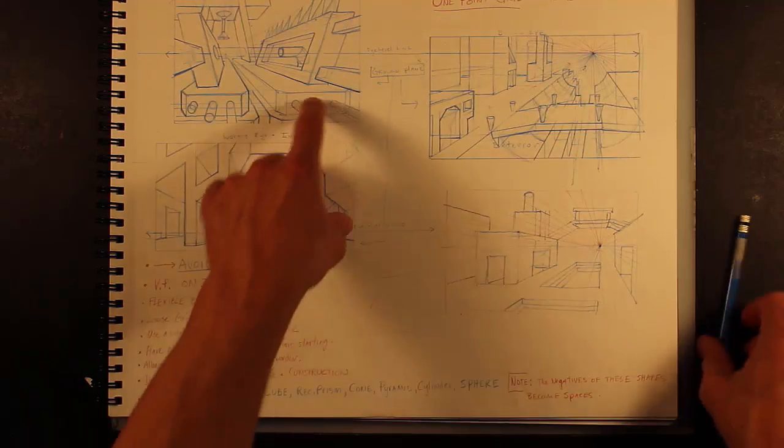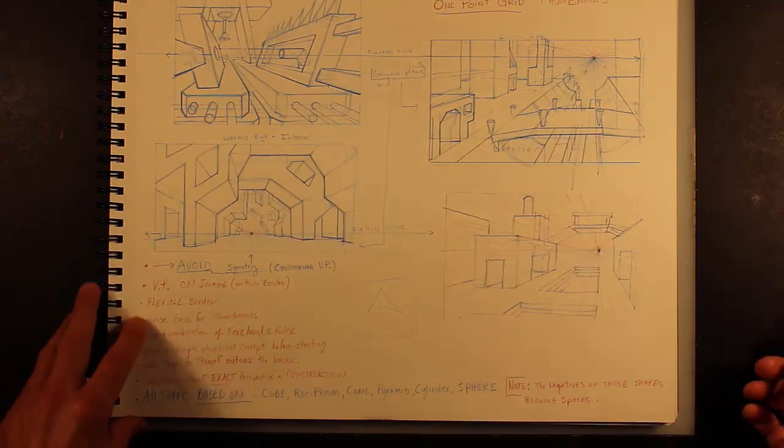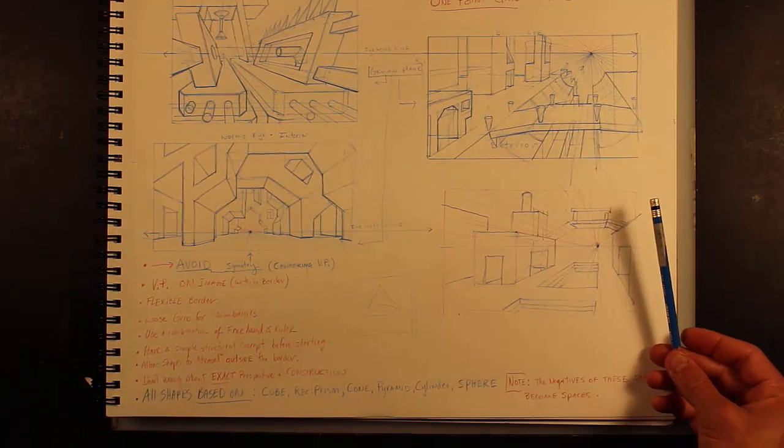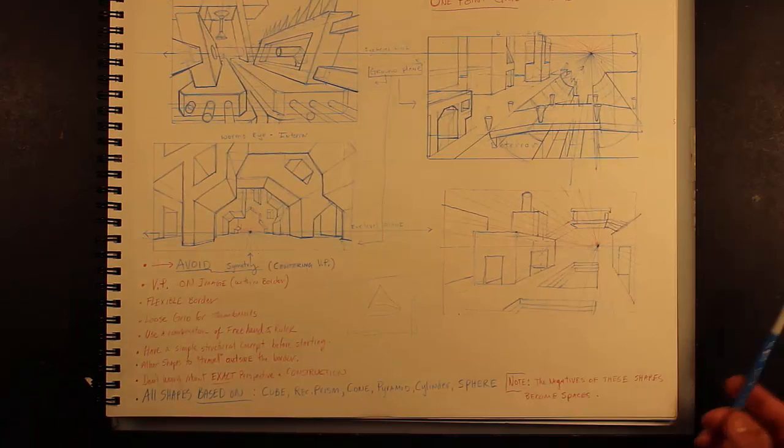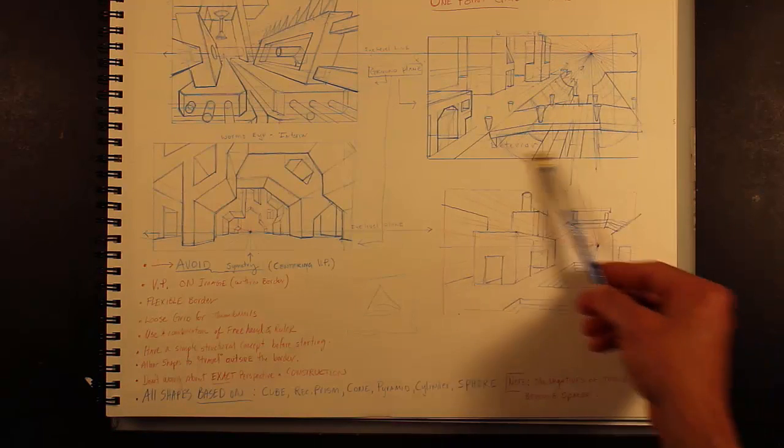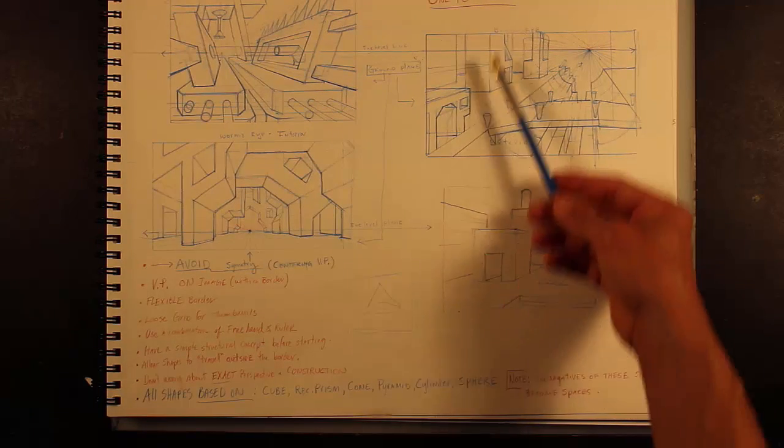So I did these, all one-point grids, and they're all complex, but based on simple premises. This was based on this negative cylinder canal that I added a bridge to and some buildings.